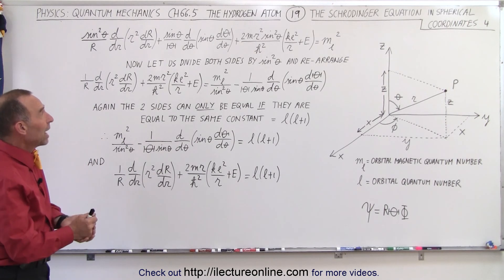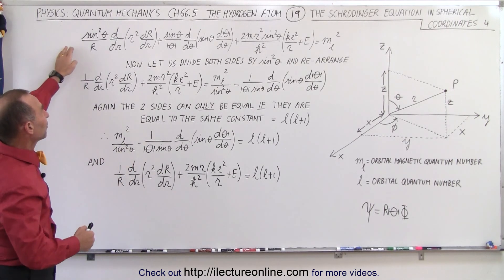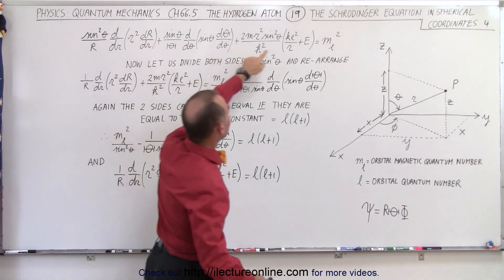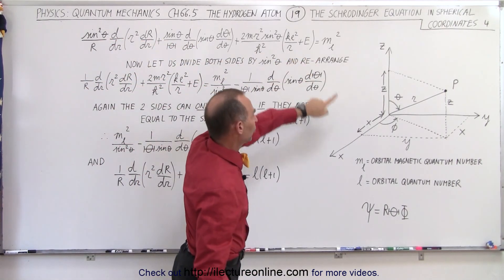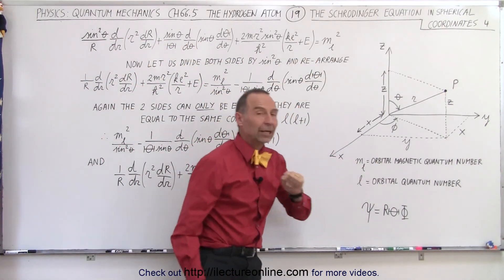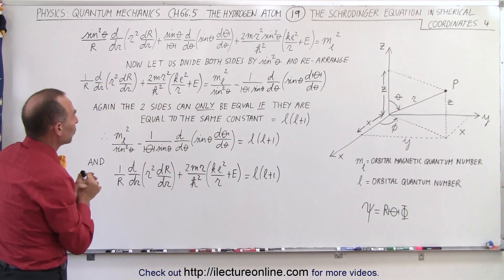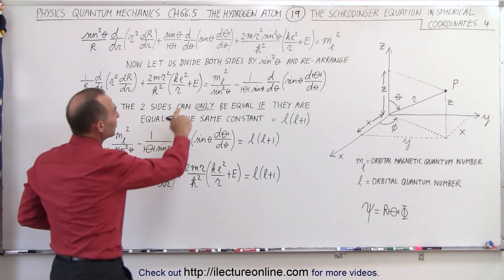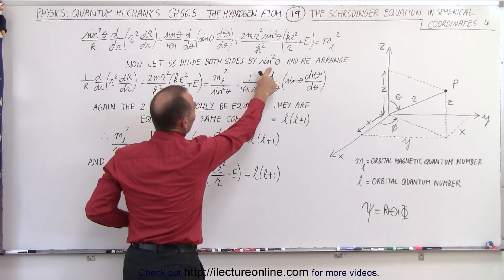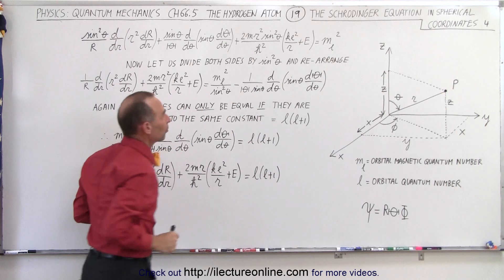What we're going to do now is take what we had in the previous video, which is right here, equal to some constant m sub l squared, where m sub l is the orbital magnetic quantum number, and now we want to separate the two variables r and theta.